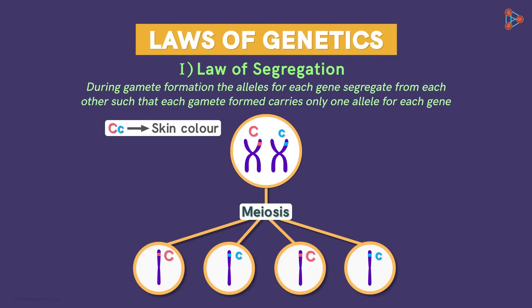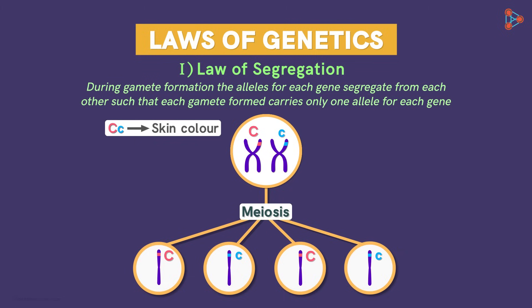This means the alleles will separate; they will not remain together in the process. The last part says that one gamete carries only one allele for each gene. At the end of the meiosis process, we get four cells such that each cell will have only one allele in it. Two cells will have capital C and the other two will have lowercase c. Thus, each gamete gets only one allele.